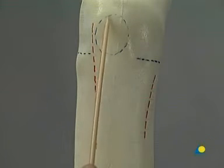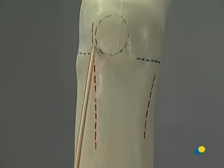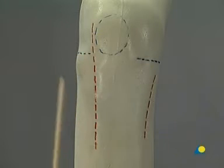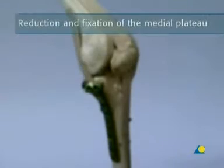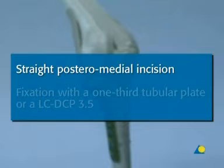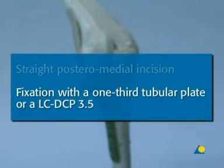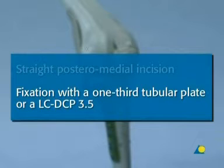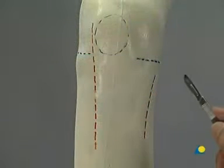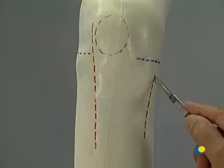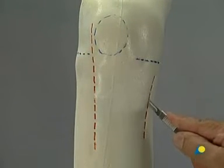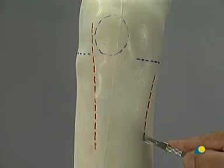The patella and the lateral and medial joint lines serve as landmarks. Reduction and fixation of the medial plateau: first, a straight posteromedial incision, and second, fixation with a one-third tubular plate or an LC-DCP 3.5. The medial incision is directly dorsal to the pes anserinus, which is elevated or partially incised depending on the fracture configuration.